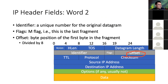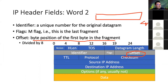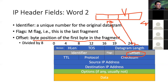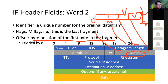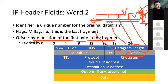The third field is Offset — the byte position of the first byte in the fragment within the original datagram. If the original datagram is 400 bytes and we fragment into 100-byte pieces, the first piece has offset 0, the second has offset 100, the third 200, the fourth 300. For the last fragment, the M-flag is set to 0, indicating no more fragments follow. This is necessary because the receiver needs to know when it has received all fragments for a given Identify value.